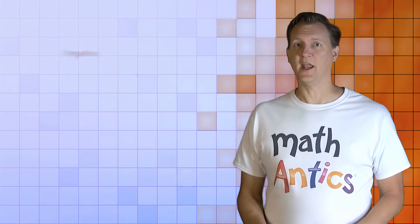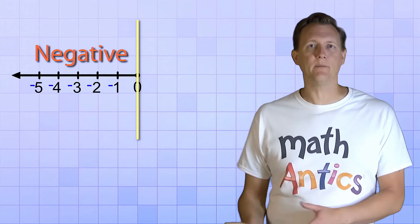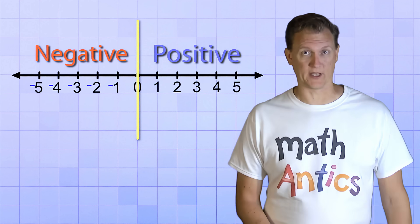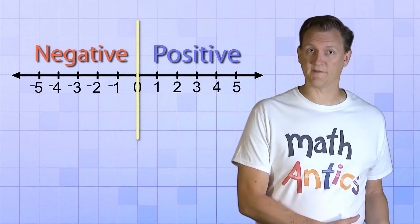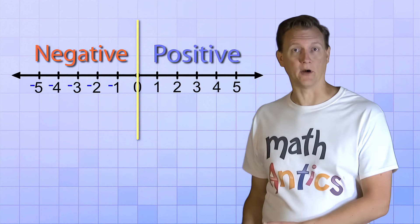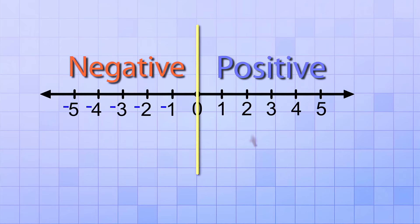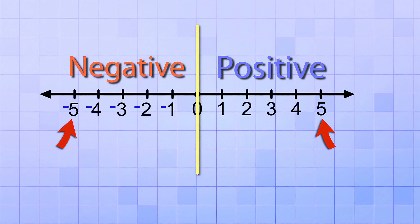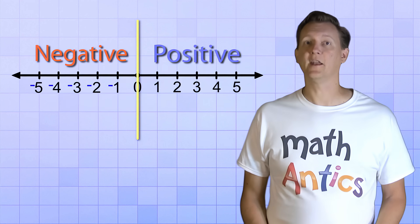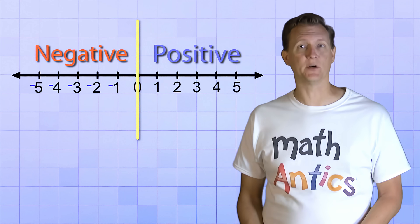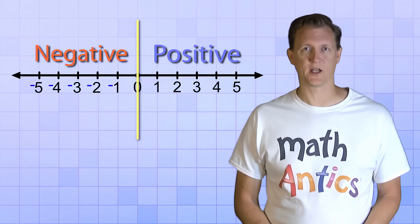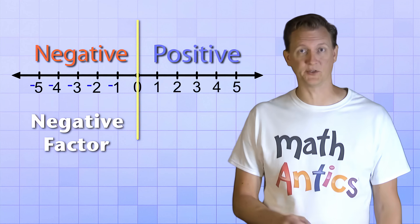As we learned in our video about negative numbers, the negative numbers are like a mirror image of the positive numbers on the number line. Each number on the positive side has a negative counterpart on the negative side. There's a 2 on the positive side and a negative 2 on the negative side, a 5 and a negative 5, and so on. Negative numbers are just like positive numbers, but they have a negative factor built into them.